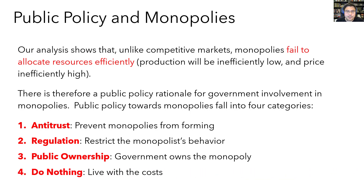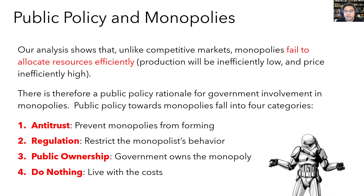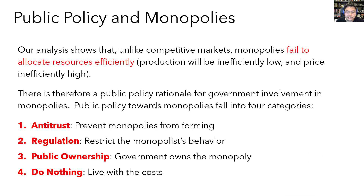Finally, there's always the option to just do nothing. This view is born from the recognition that the government itself is made up of people with their own agendas, so the government is neither all knowing nor all benevolent, and we don't necessarily trust it to make decisions that are better than what a monopolist would do. Another argument for doing nothing is that not all monopolists are that powerful, depending on the size of the barriers to entry. Amazon, for example, is by far the dominant platform for e-commerce, but it does face threats in certain lines of business. If it charges too large a cut from buyers or sellers, it might give competitors a window to gain market share, and this threat from potential competition constrains its pricing ability.